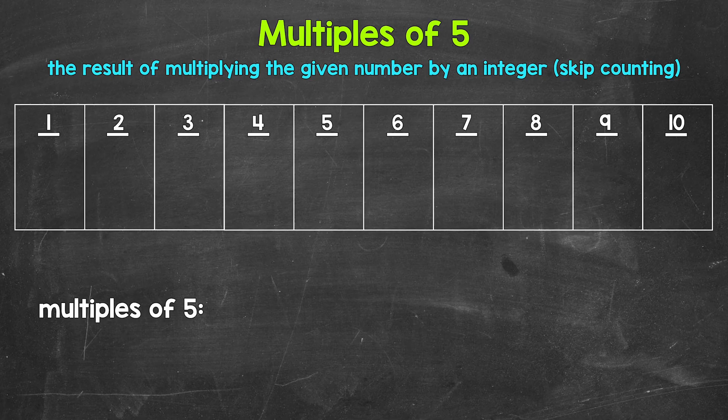Now remember, a multiple is the result of multiplying the given number by an integer. So 1 times 5, 2 times 5, 3 times 5, so on and so forth. Another way to think about multiples is to skip count. So all of the numbers something is going to hit when counting up by that number, those are all going to be multiples.